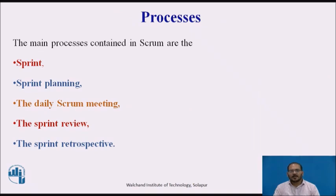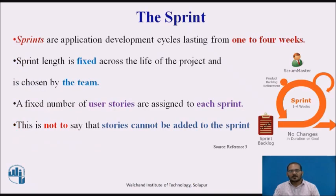The main processes contained in Scrum are the sprint, sprint planning, the daily Scrum meeting, the sprint review, and the sprint retrospective. Sprints are the application development cycle lasting from one to four weeks. Sprint length is fixed across the life of the project and is chosen by the team. A fixed number of user stories are assigned to each sprint, though stories can be added as long as doing so does not exceed the team's capacity to create, test, and deploy a working application by the end of the sprint.